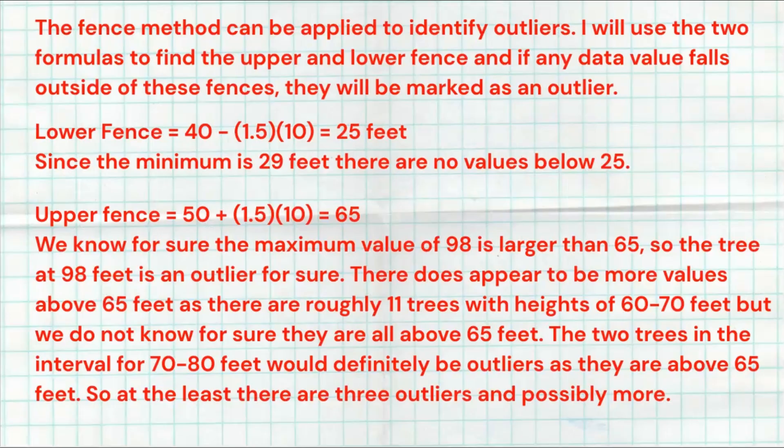Here's my work for that problem. I will use the two formulas to find the upper and lower fence. If any data values fall outside of those two fences, then they're going to be marked as an outlier. The lower fence is Q1, 40 minus 1.5 times the IQR, which is 10, and I got 25 feet. The minimum is 29 feet. Therefore, there could be no values below that, so there's not going to be any lower outliers since the bottom fence is 25 and 29 is my min.